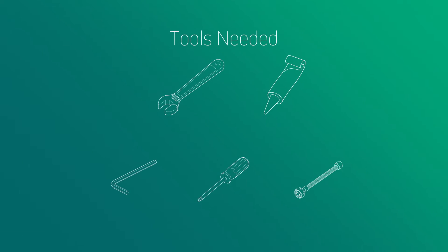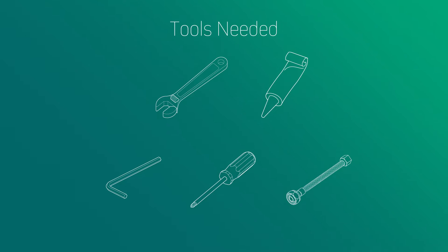There are a few tools and supplies that you will need to assist you with installing the faucet. You will need an adjustable wrench, a tube of silicone, a 3/32-inch Allen wrench, a Phillips head screwdriver, and water supply hookups for half-inch IPS connections.